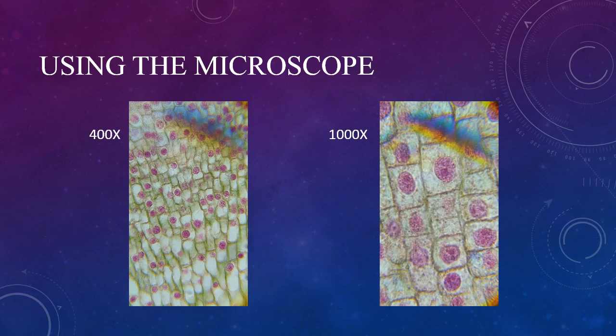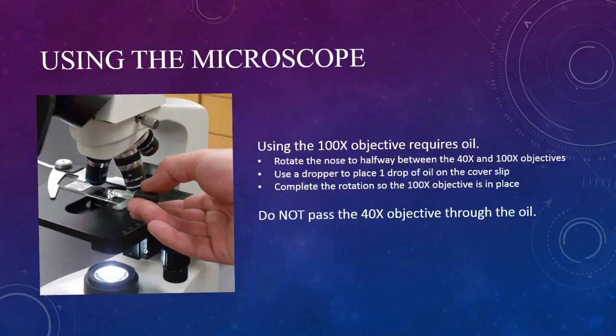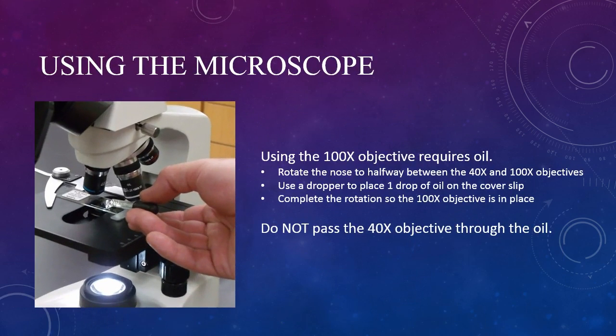We can go further, though, with another change to the setup of our microscope. There is a 100x oil immersion objective lens on this microscope. It uses oil to channel light up from the slide to the lens like a tube. Without the oil, the light would be too scattered to get a usable image at such high magnification.